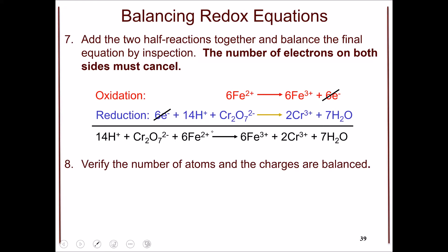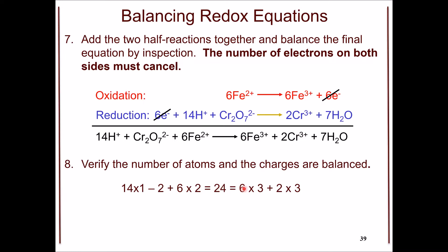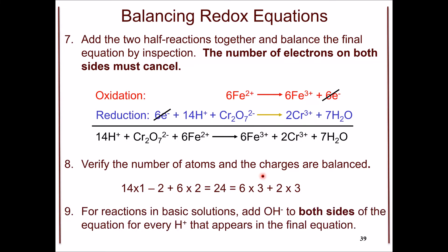To verify, check that the number of atoms of each element and the charges are balanced. Hydrogen: 14 on the left, 14 on the right. Chromium: 2 on each side. Iron: 6 on each side. Oxygen: 7 on each side. The charge is also balanced: on the left-hand side, 14 plus, plus 2 minus, plus 6 times 2 plus equals 24. On the right-hand side, 6 times 3 plus, plus 2 times 3 plus, also equals 24.